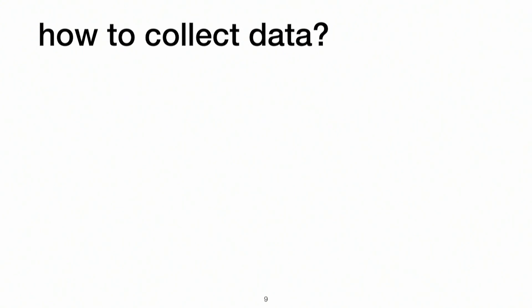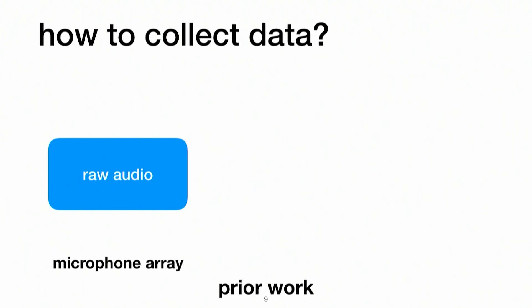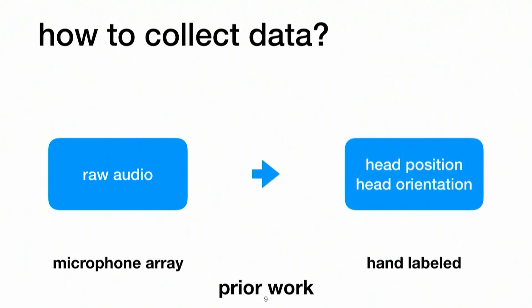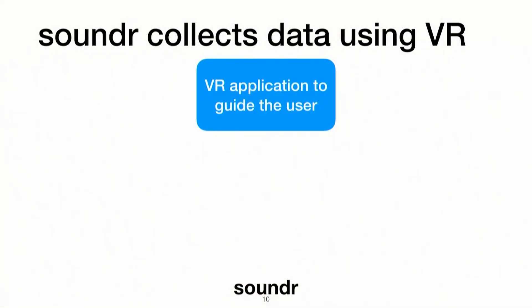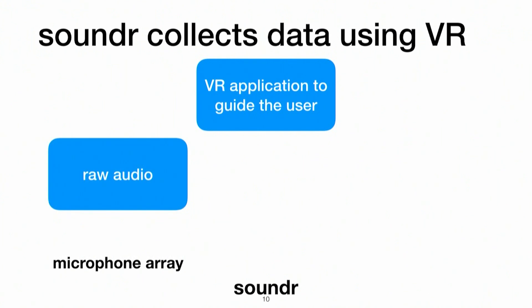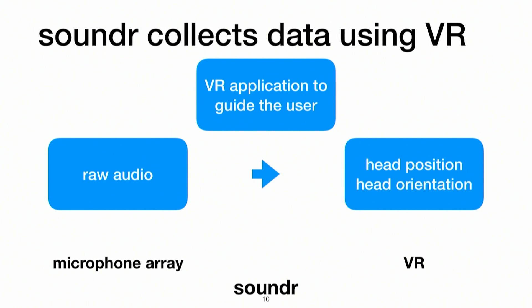The question came down to how do we collect data? Prior work collects raw audio using a microphone array, and head position and orientation via hand-labeled video data using Mechanical Turk or similar — which is time-consuming and really inaccurate. What our system, Sounder, does is use a VR data collection pipeline. We built a VR application that guides the user to move around a room in an evenly distributed way. We use a microphone array to collect raw audio, and since VR has much better accuracy for head-tracking, we use that as ground truth.